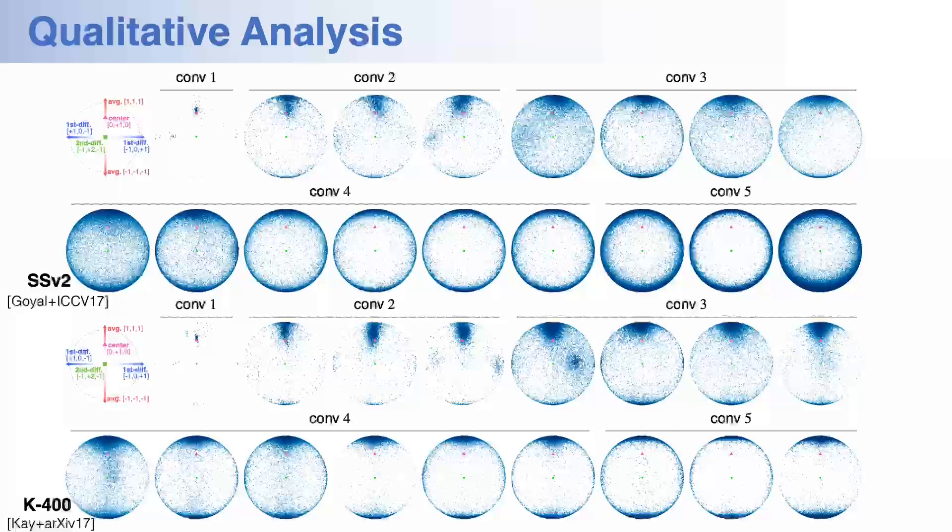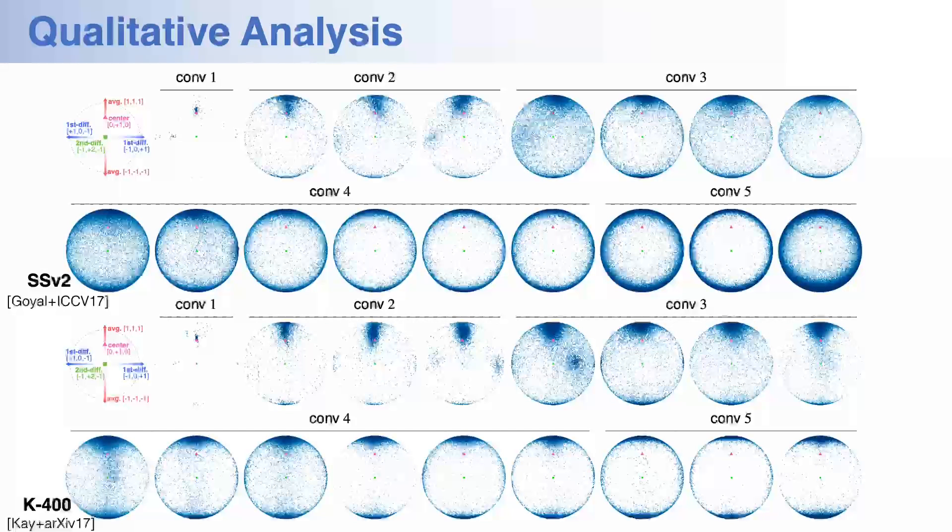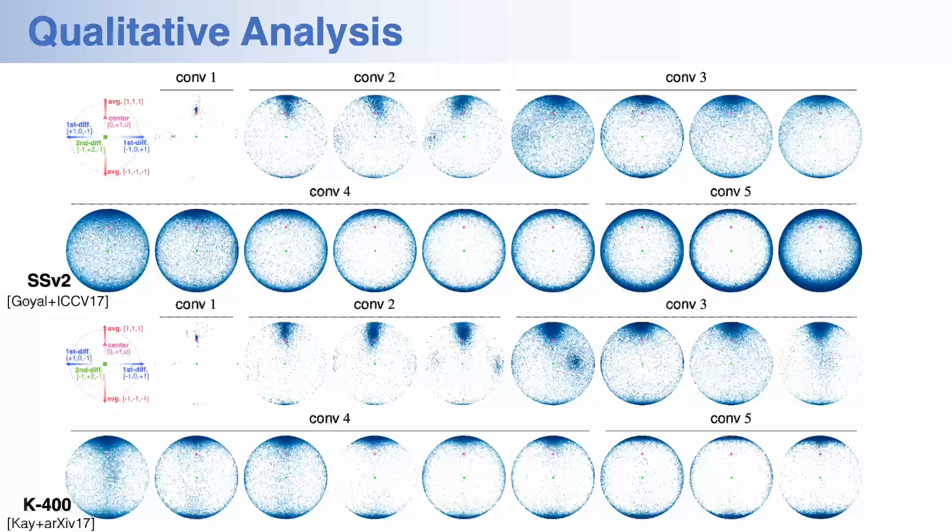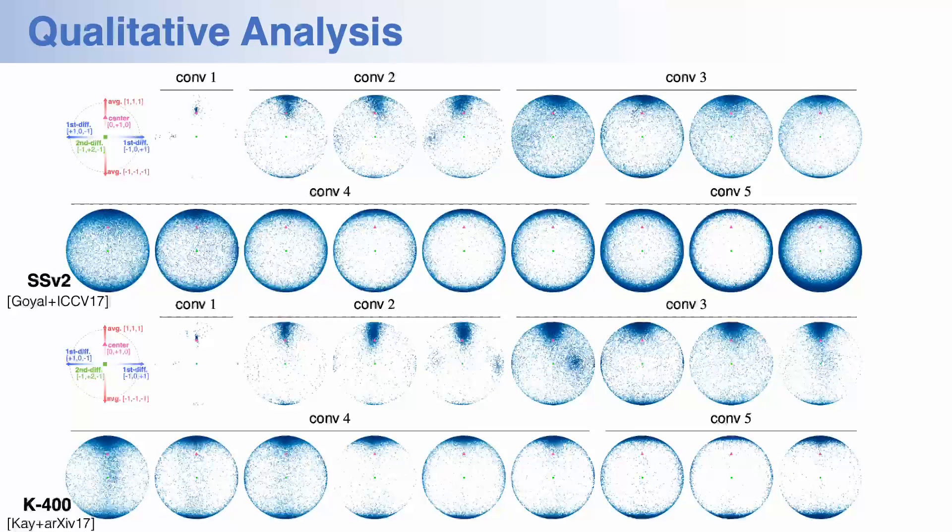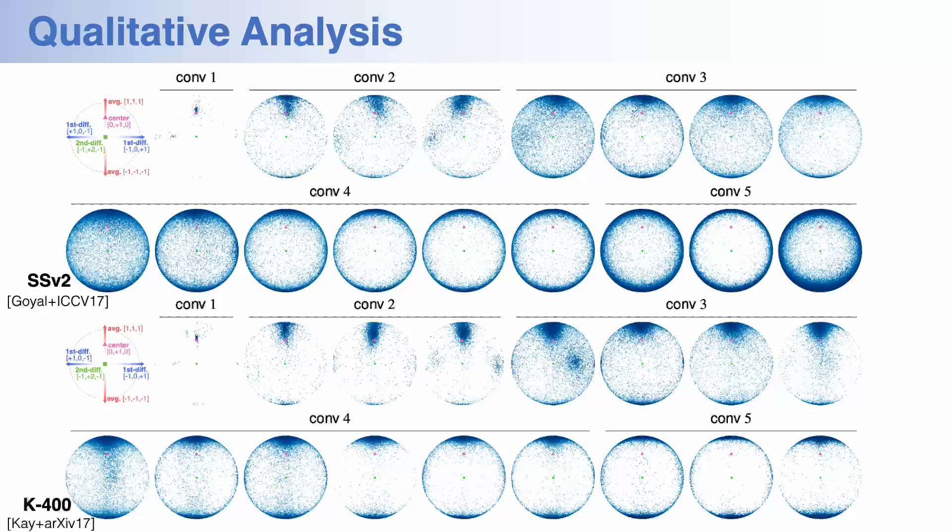This slide shows the distribution of temporal filters sampled at each convolution block, which is connected to depth in the model. The upper one is the result of I3D ResNet pre-trained on something-something, and the bottom one is on Kinetics dataset. We can find some interesting characteristics of these distributions at shallow and deep layers.